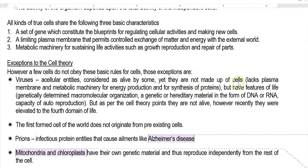Viruses are not surrounded by a cell membrane, and they lack metabolic machinery for energy production and synthesis of protein — so these two characteristic features are lacking in viruses. However, they do have some features of life. One classical point is that they have a genetically determined macromolecular organization; hereditary material in the form of DNA or RNA is commonly present in any kind of virus. But as per the cell theory, they are exceptions to two points: they lack the cell plasma membrane, and they do not have metabolic machinery — they are mainly dependent on the metabolic machinery of the host cell.